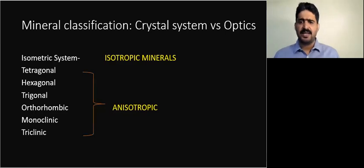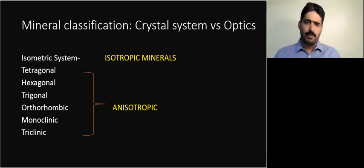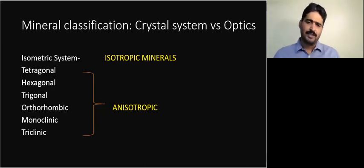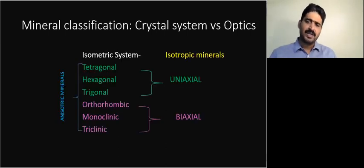As we saw in the last class, minerals can be classified based on the crystal system, and this has a relationship with optical properties. Based on optical properties, crystal systems are broadly classified into isotropic and anisotropic, where the isometric system characterizes isotropic minerals and all other systems constitute anisotropic minerals. Anisotropic minerals can be further classified as uniaxial and biaxial.